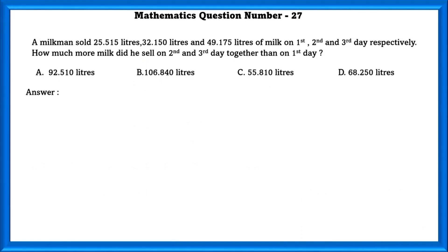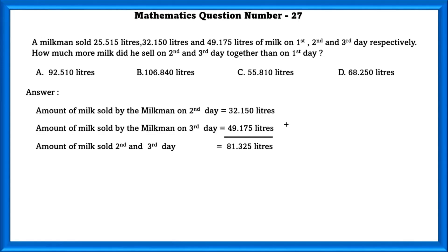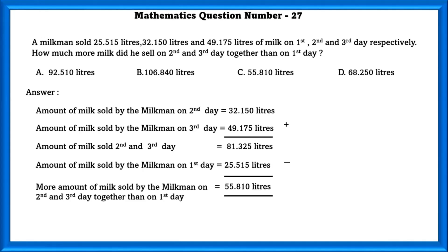Mathematics question number 27. A milkman sold 25.515 liters, 32.15 liters and 49.175 liters of milk on the first, second and third day respectively. How much more milk did he sell on the second and third day altogether than on the first day? The amount sold on the second and third day together is 81.325 liters, so the extra amount sold compared to the first day is 55.810 liters.